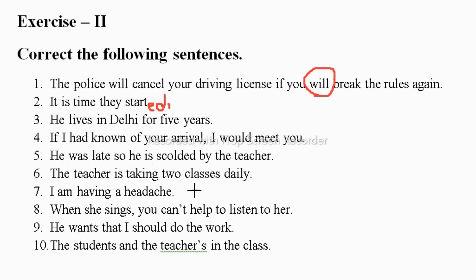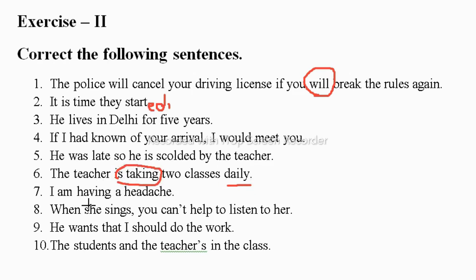'The teacher is taking two classes daily.' Since 'daily' indicates a daily/habitual action — like 'the sun rises in the morning' — we use V5 (simple present). The '-ing' form shows an ongoing process, but here we are talking about a daily action. So the correct sentence is: 'the teacher takes two classes daily.'